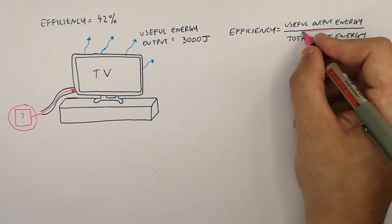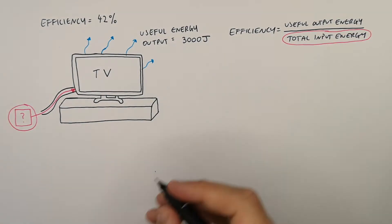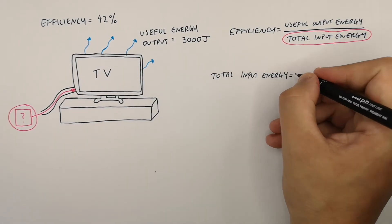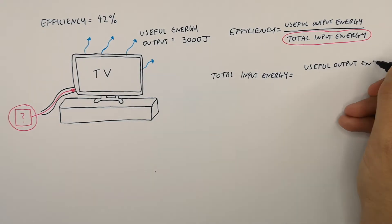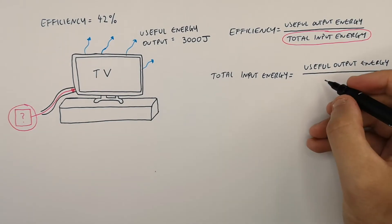So rearrange for the total input energy. Total input energy equals useful output energy divided by efficiency.